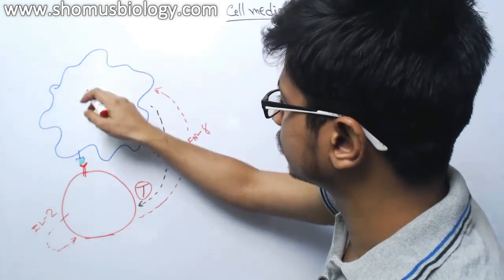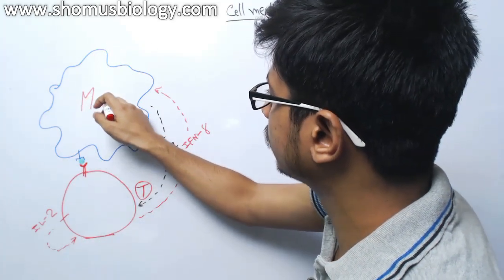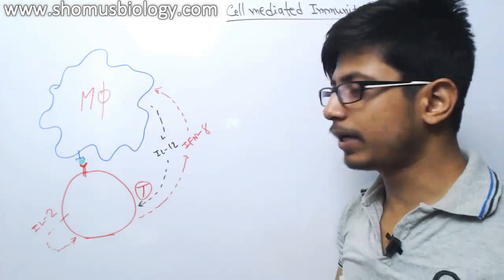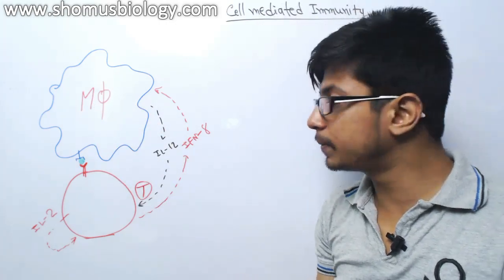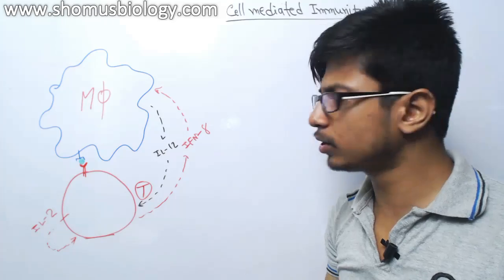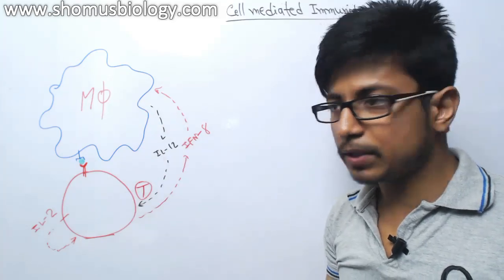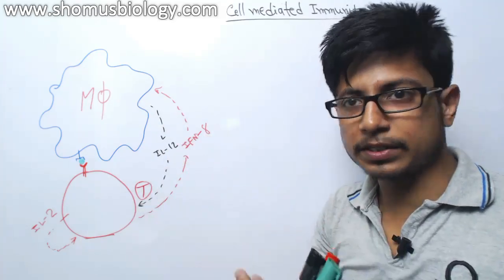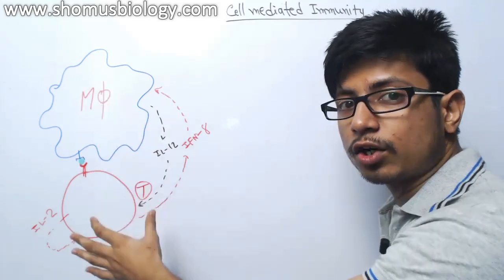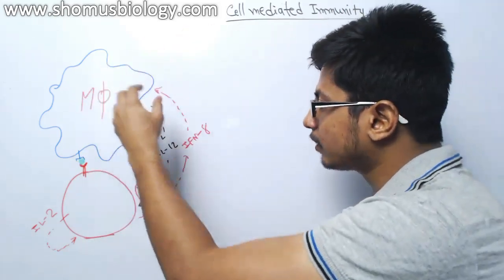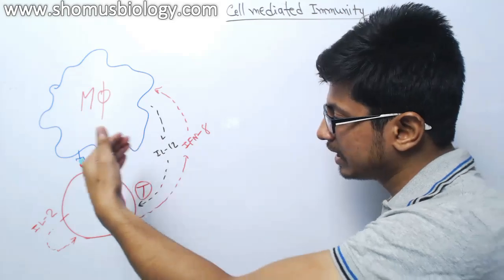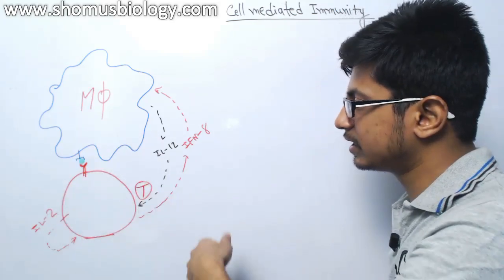Remember, this is what we are talking about macrophage. So there is a cross-talk between the T-cell and macrophage or T-cell and dendritic cell. Between the T-cell and any antigen presenting cell, there is this chemical cross-talk because this macrophage is secreting IL-12. In that sense, T-cell is releasing interferon gamma.